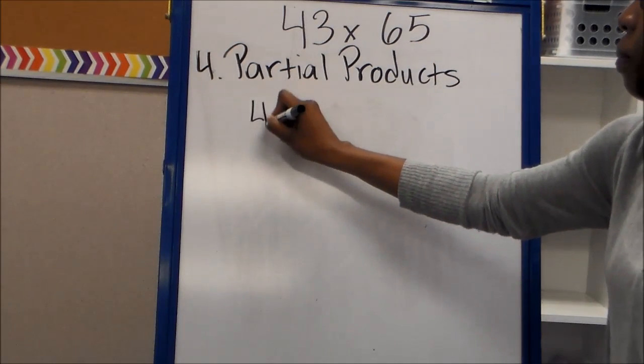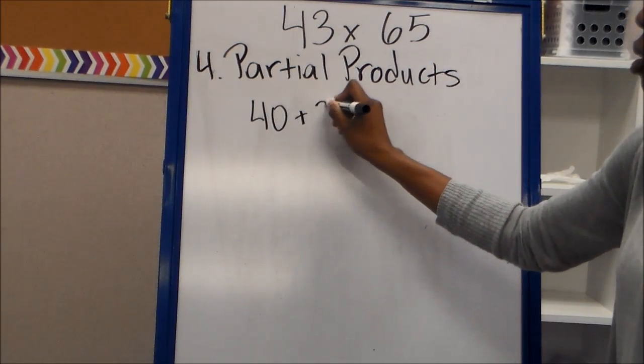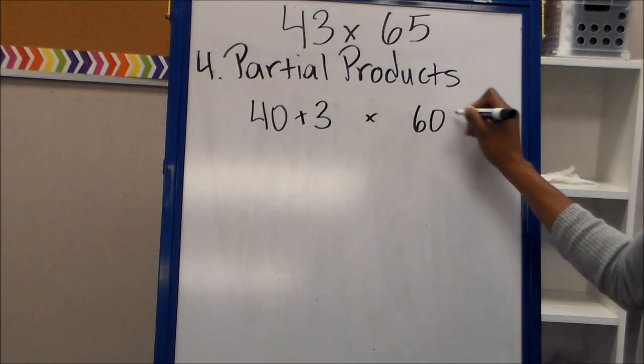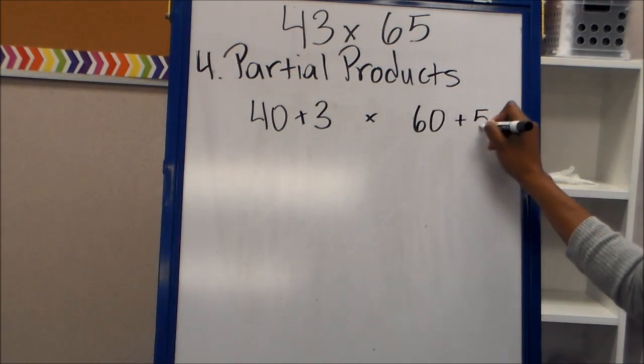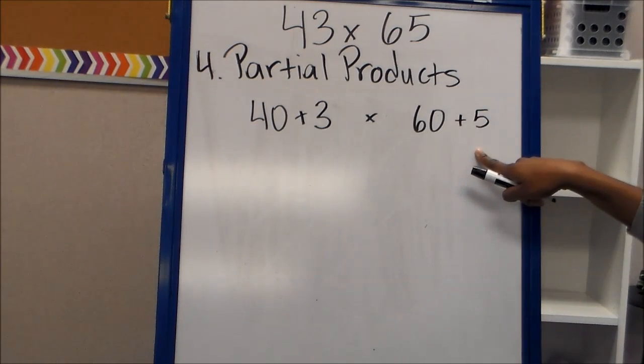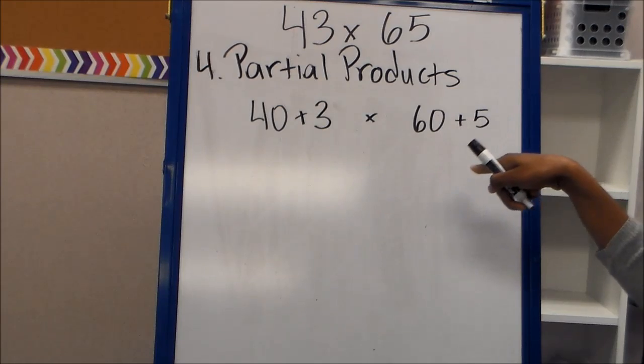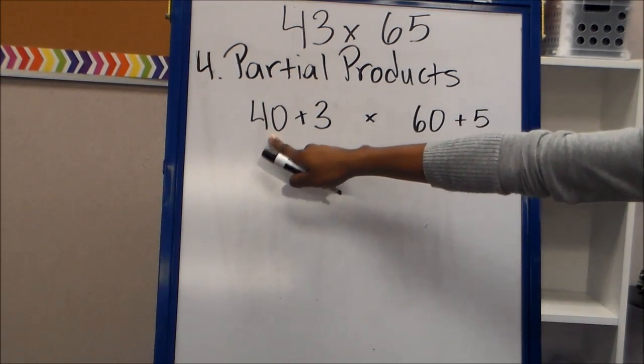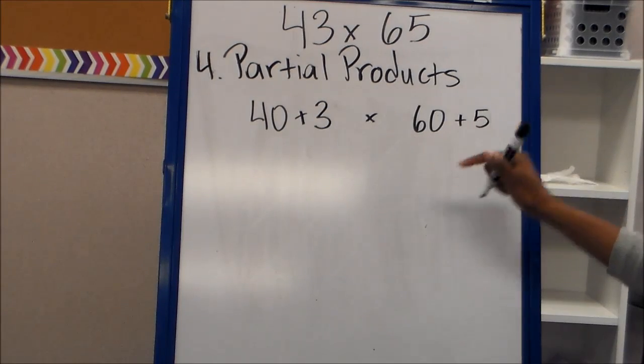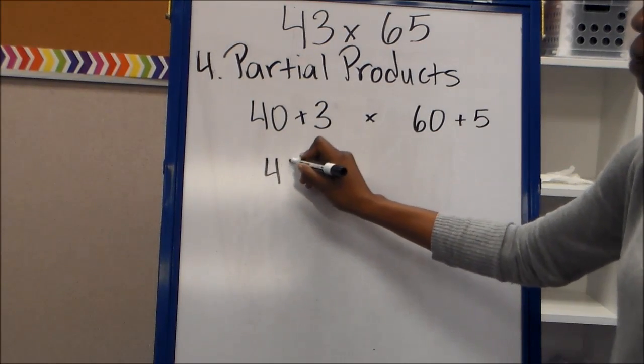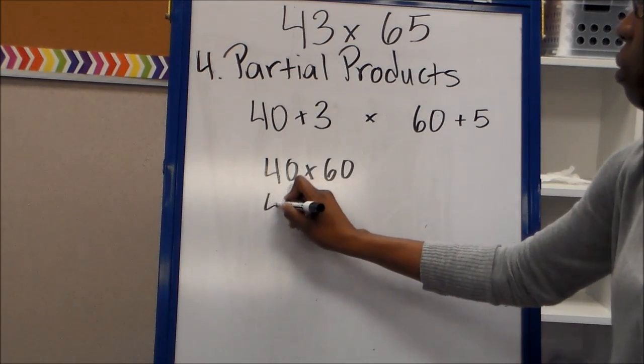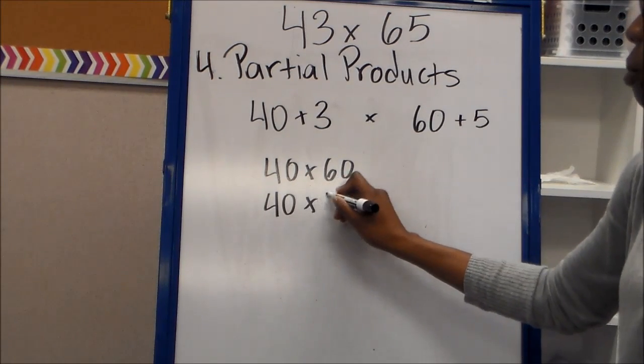So the first thing you have to do is write out your factors in expanded form and multiply each part of the factor by the other. So we have 40 plus 3, and we're multiplying that by 60 plus 5. And I know this looks familiar because they're going to be learning this in fifth grade, but the first thing you're going to do is multiply this 40 by 60 and 5. So 40 times 60, and then 40 times 5.